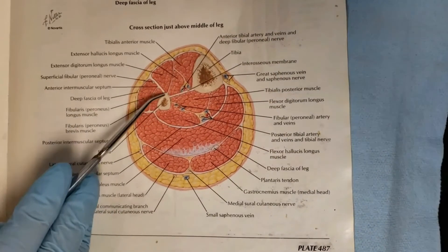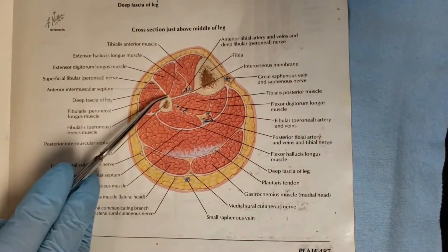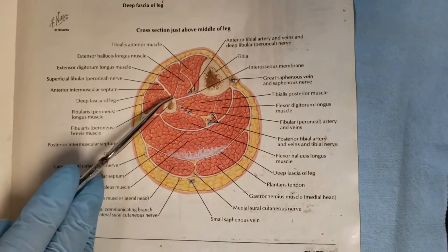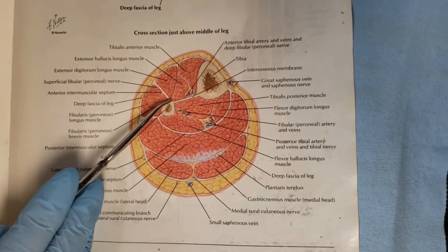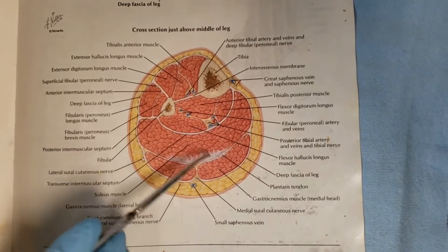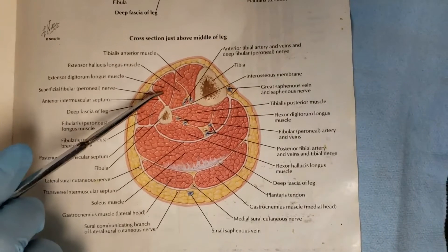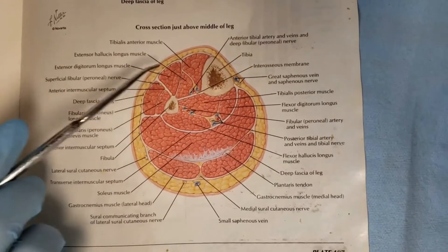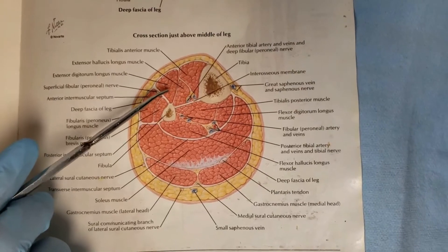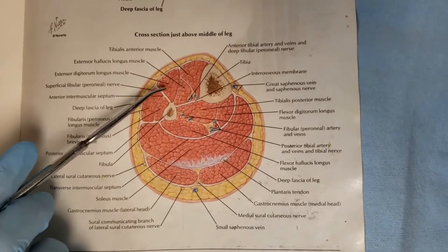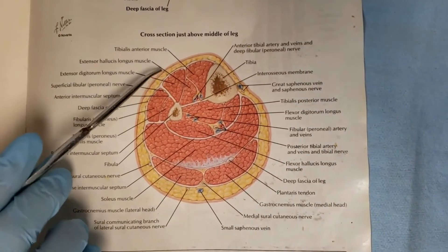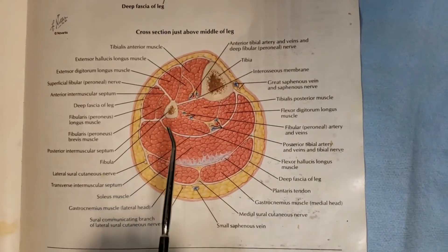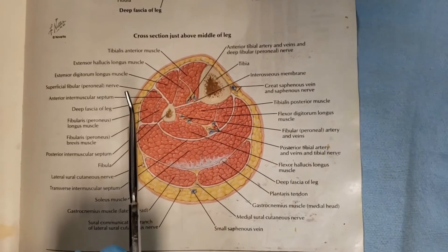This compartment is an extensor, dorsiflexor compartment. Compared to the posterior compartment, it has much fewer and much smaller muscles. Dorsiflexion strength is about a quarter of plantar flexion strength, and there are half as many muscles. Dorsiflexion range of motion is normally around 20 degrees.